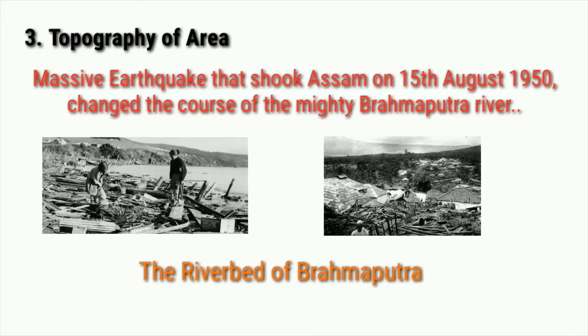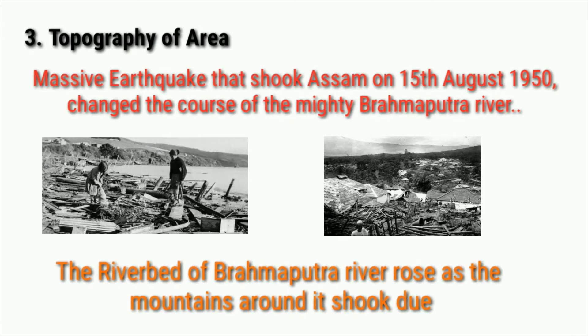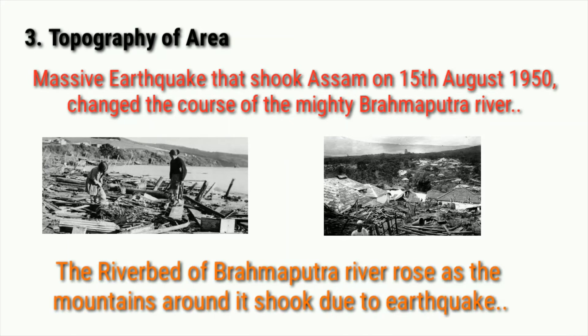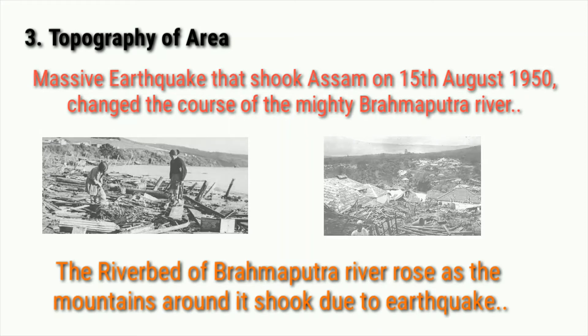The riverbed of Brahmaputra rose as the mountains of the area shook due to the earthquake, and a stable course of the river became a constantly shifting course with a river eroding its banks.